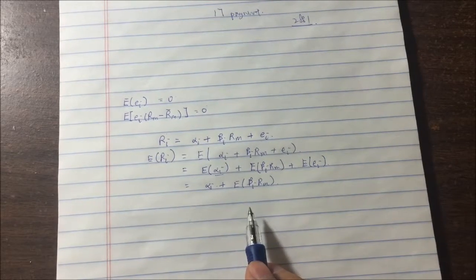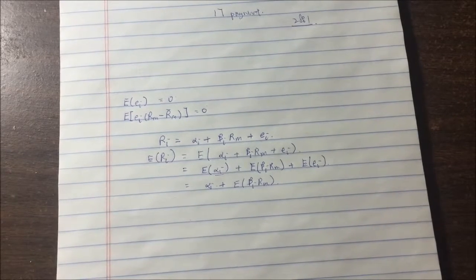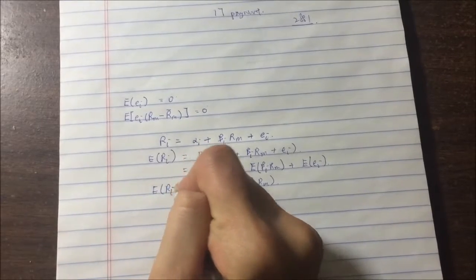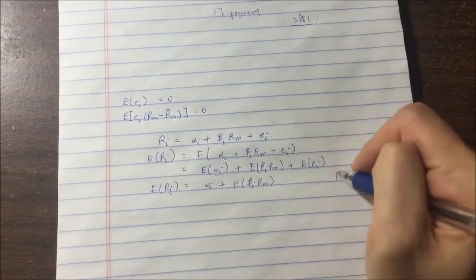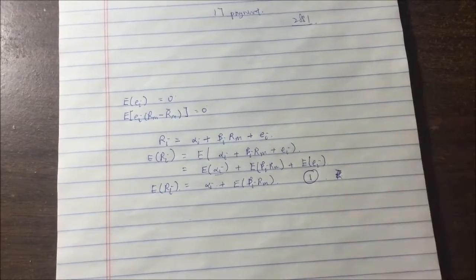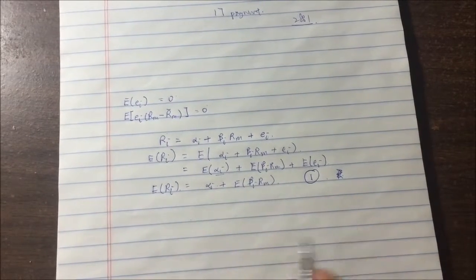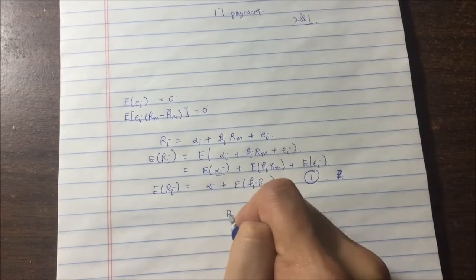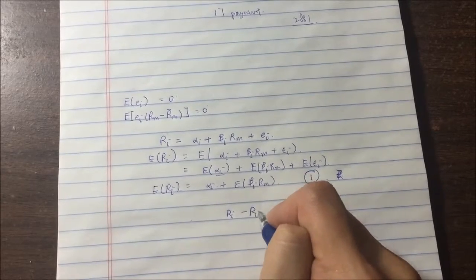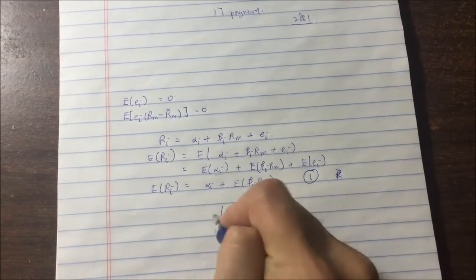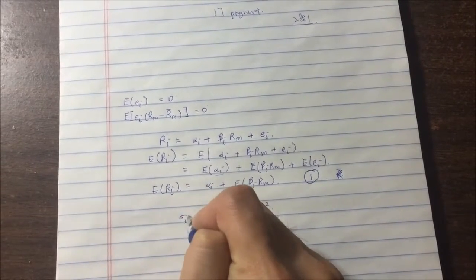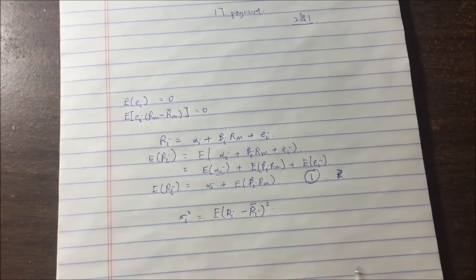So the variance by definition would be, let's say this is expected return of this. Let's call this formula number one. So the definition of variance would be RI minus R̄I, so the average expected return. Let's call this variance squared. So this is the variance.